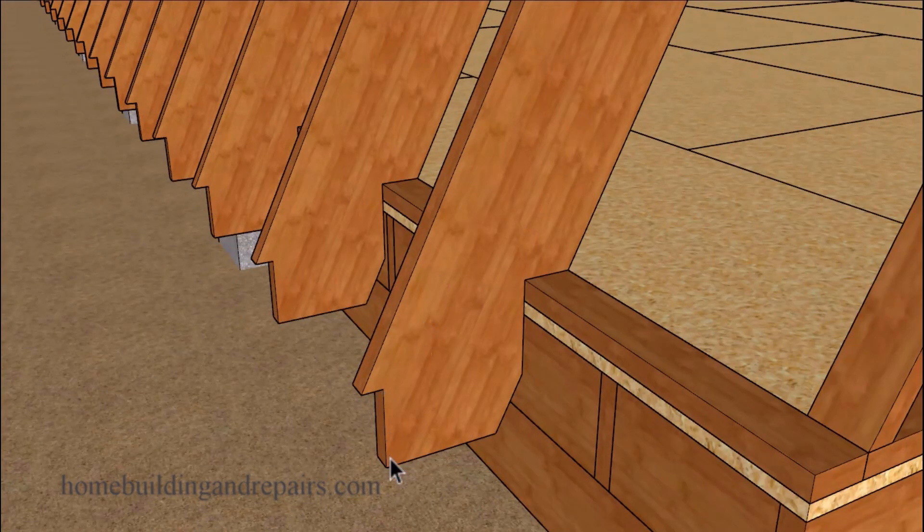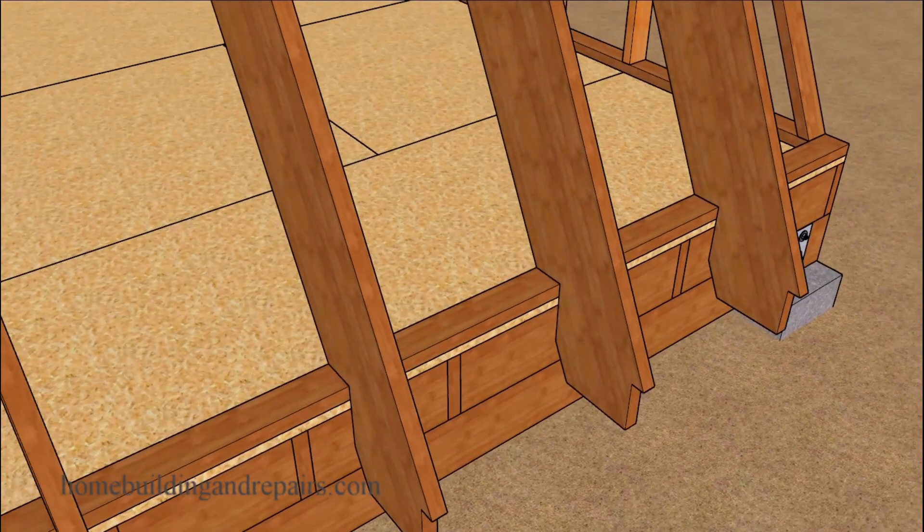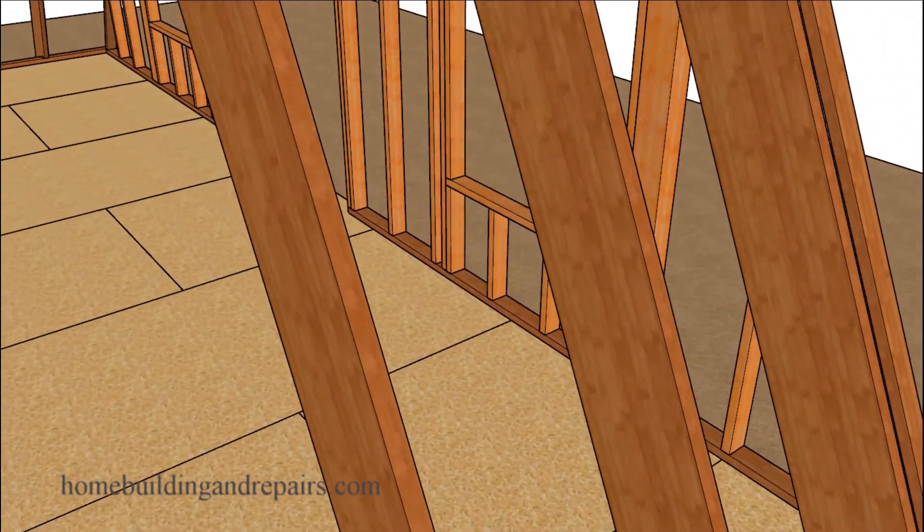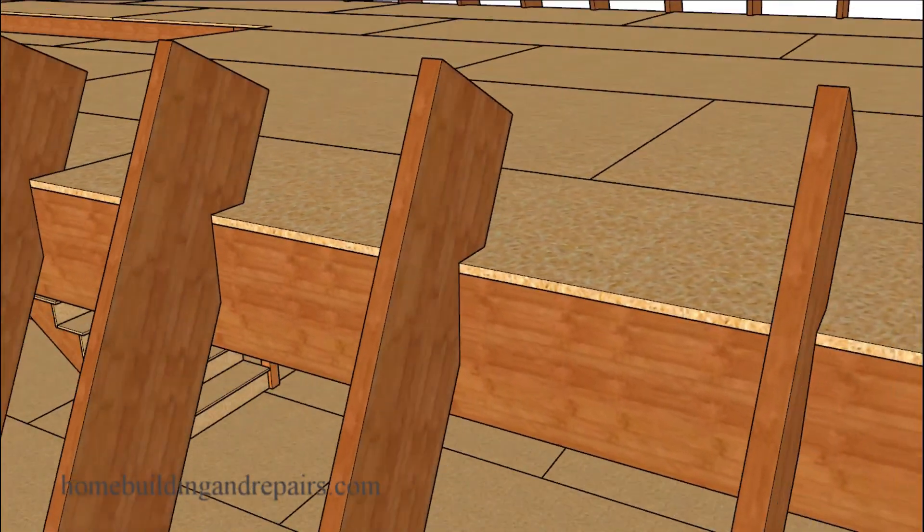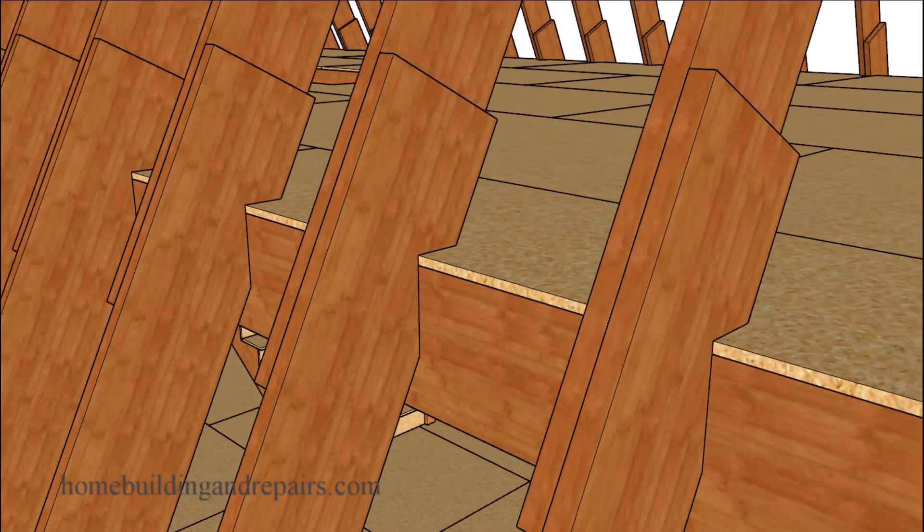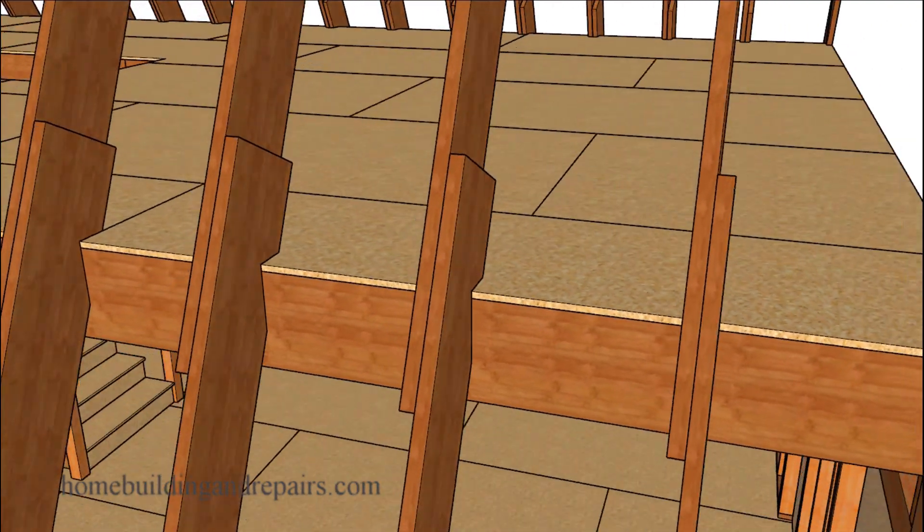Of course we are notching it for the fascia board. I would imagine all of this stuff here could be fastened together with 16D nails. Our roof rafters are 24 inches on center. We will be lapping the upper roof rafters with the lower roof rafters. These will all nail together with 16D nails. You get a nice connection here between the lower and the upper framing.